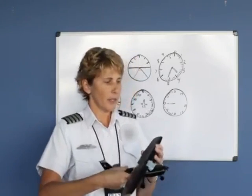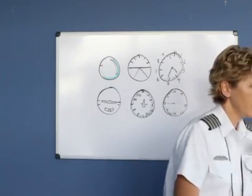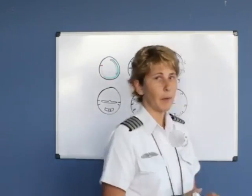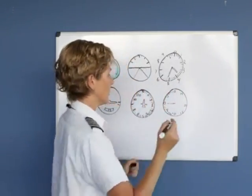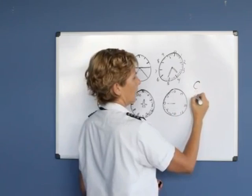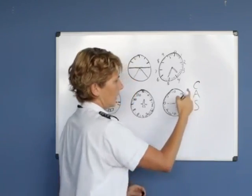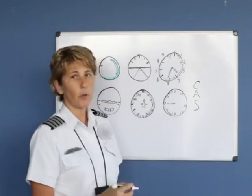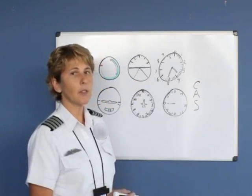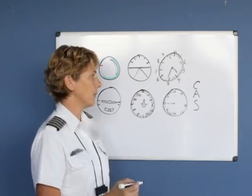In order to set up slow flight, we have to remember three things first, and we use CAS. CAS stands for Clearing Turns, Altitude Consideration, and a Safe Area.